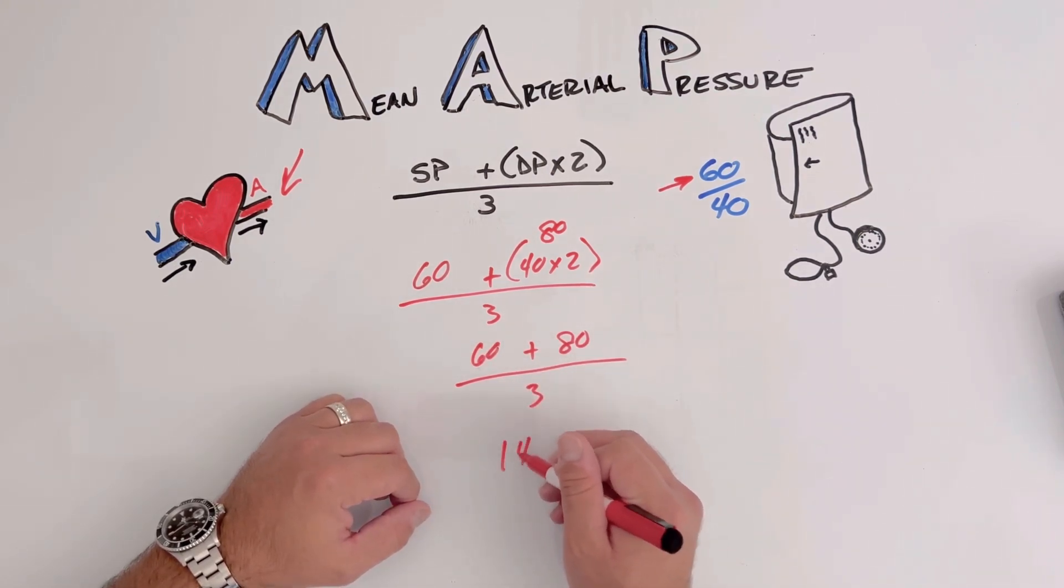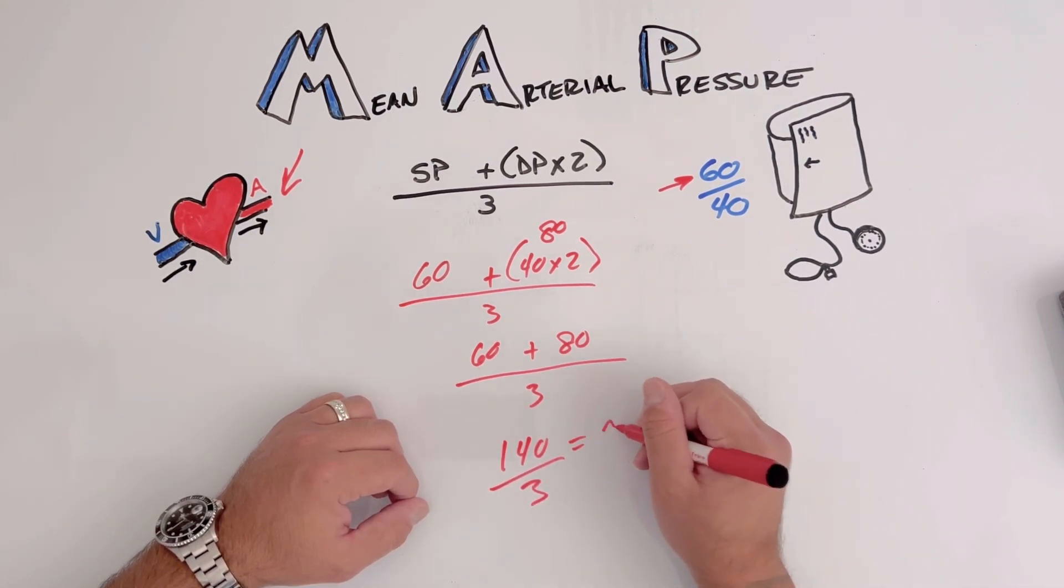We're going to do 140 because we're adding the top divided by three, and it's going to give us about a 47 MAP. Not good.